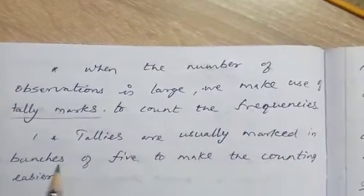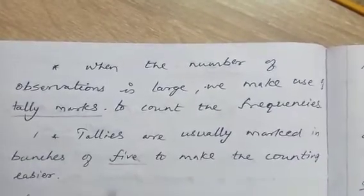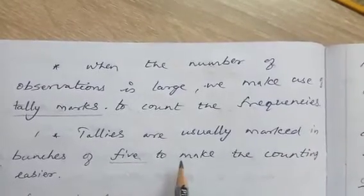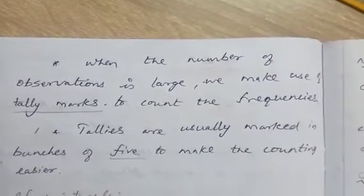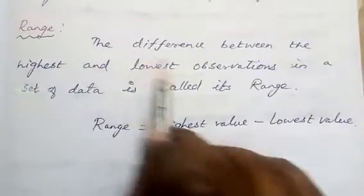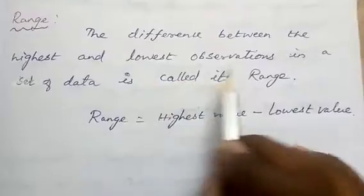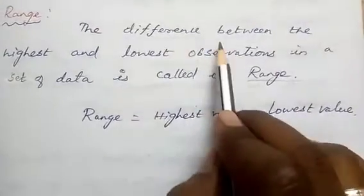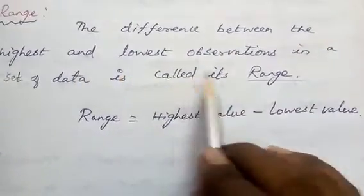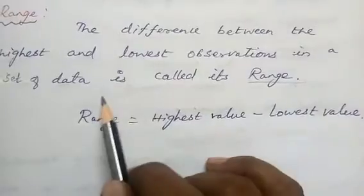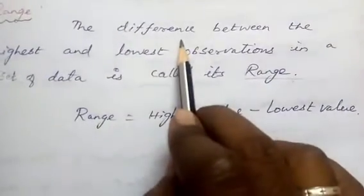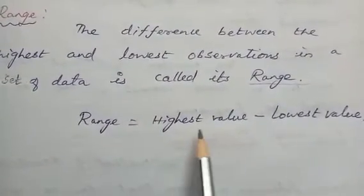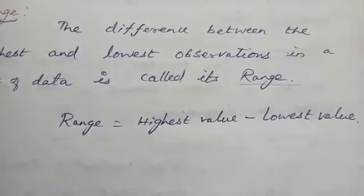Tallies are usually marked in bunches of 5 to make counting easier. The next one is range — the difference between the highest and lowest observations in a set of data is called its range. So difference means subtract: range is equal to highest value minus lowest value.